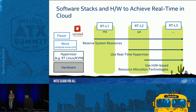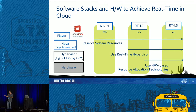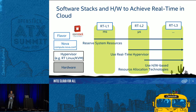On the OpenStack side, you define a flavor for real-time and configure Nova to reserve system resources. From our experience, this achieves millisecond-level real-time — call it L1. To achieve microsecond-level real-time — L2 — you start using a real-time hypervisor. For something in between, like 10–20 microseconds, you also need to enable some hardware-based resource control.